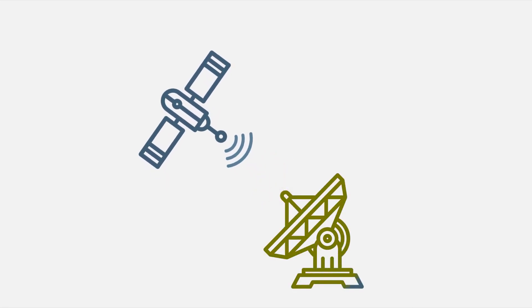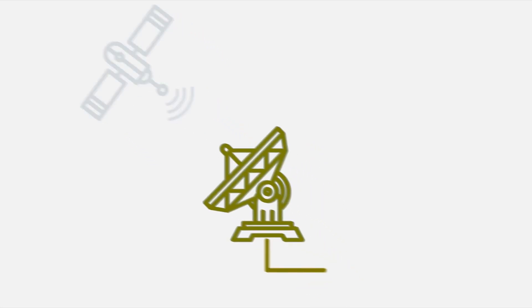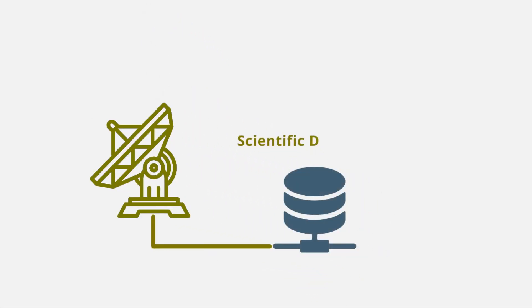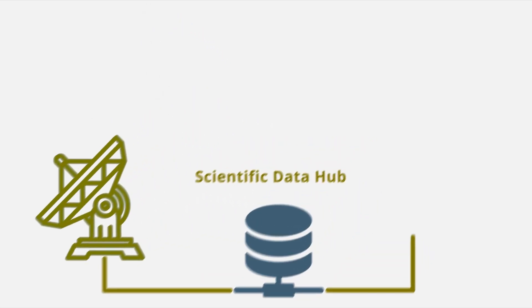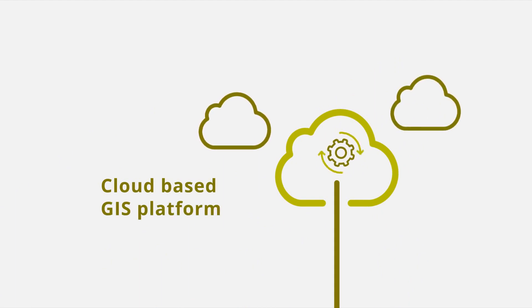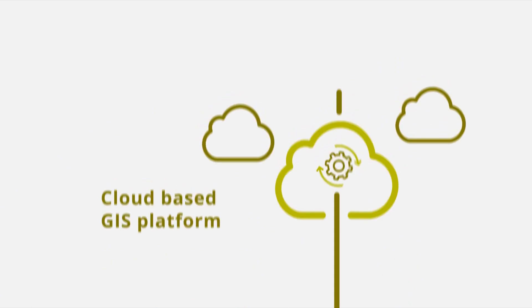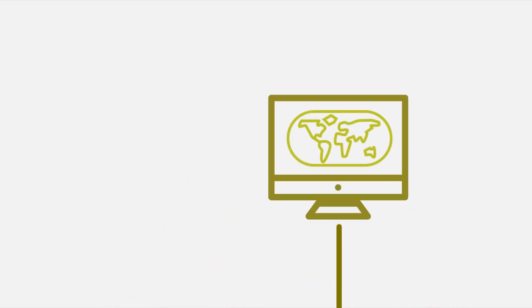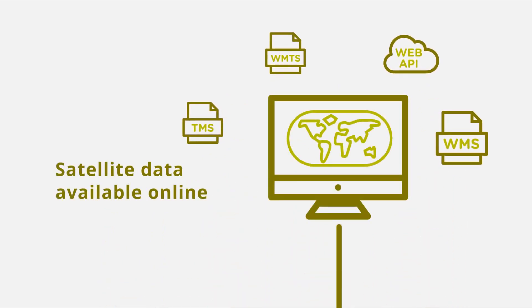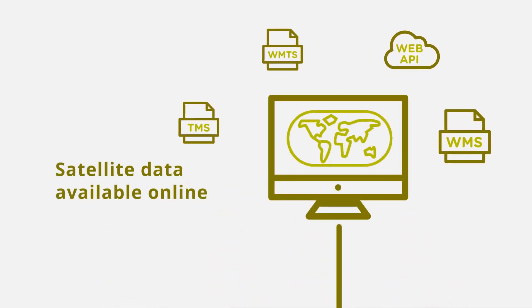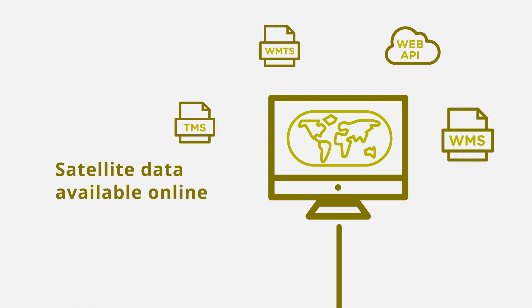Our archive infrastructure downloads worldwide data from the Copernicus Scientific Data Hub, performs automatic processing and makes the data available through a browser GIS interface or through OGC Compliance Services or APIs, which can be easily integrated in third-party applications.